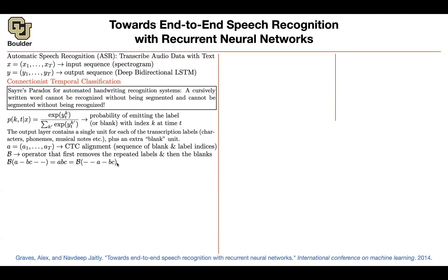Another path could give you the same label. There could be repetitions — for instance, here you have A, B, B, B, because for the same input signal you're outputting the same letter. Your model is outputting the same letter because that's your input signal; it's longer than your target, so the model keeps repeating itself. If you remove the repetitions, that gives you 'ABC'. So there are multiple different paths that correspond to the same label.